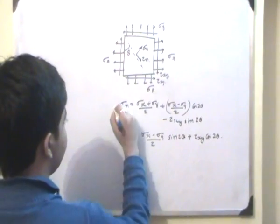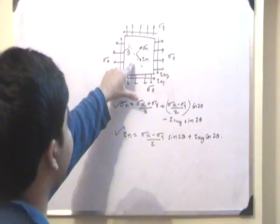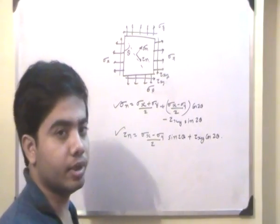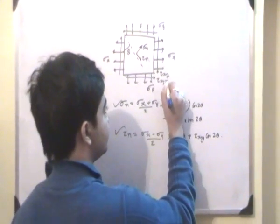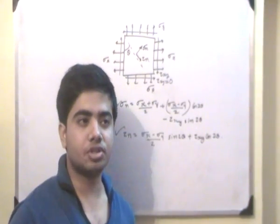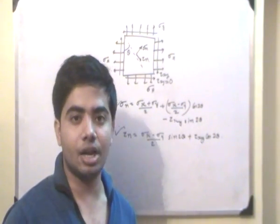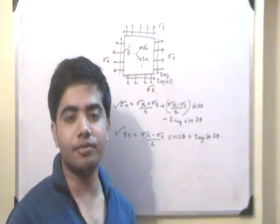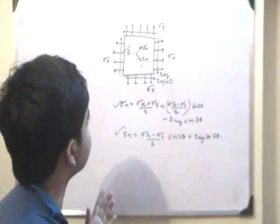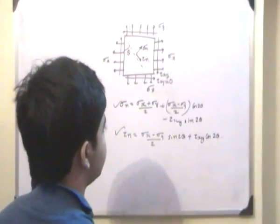Now, we have this value of sigma_n and this value of tau_n. This is a plane state of stress system. If we have to convert this to a biaxial state of stress system, what we need to do is put the shear stress tau_xy equal to 0. A biaxial state of stress system is one wherein normal stress acts along the x-axis and y-axis, and the body is only subjected to normal stress across its perpendicular axis. So this becomes a biaxial state of stress system when tau_xy equals 0.